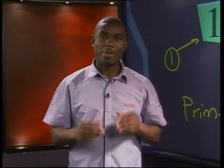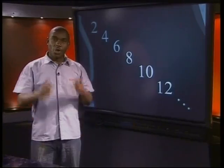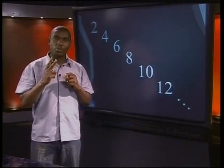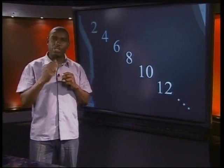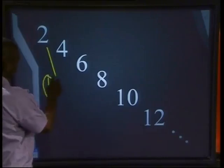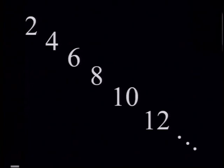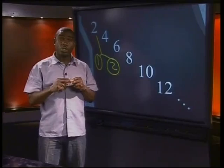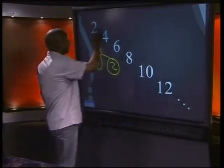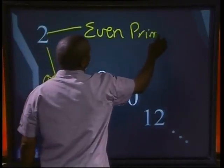How many even prime numbers are there? Look at the positive even numbers: 2, 4, 6, 8, 10, 12, and so on. The only prime number here is 2, since 2 is the only number that has two different factors, namely 1 and the number 2 itself. All the even numbers have 2 as a factor, so 2 is the only even prime number.